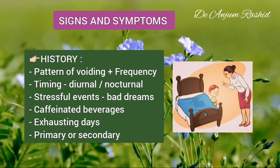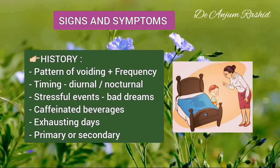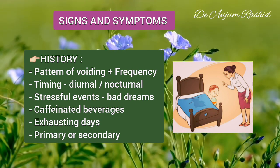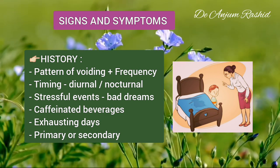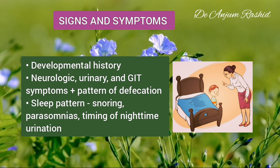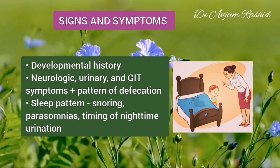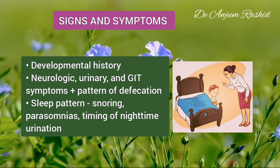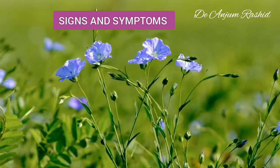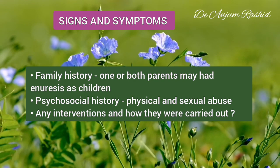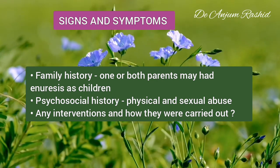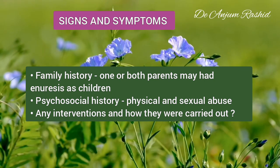The history of the child should focus on clarifying the pattern of voiding, including frequency, timing, whether diurnal or nocturnal, associated conditions or stressful events — for example, bad dreams, consumption of caffeinated beverages, exhausting days — and whether the enuresis is primary or secondary. Systemic review should include developmental history and detailed information about neurological, urinary, and gastrointestinal symptoms, including the pattern of defecation. A history of sleep patterns is important, including snoring, parasomnias, and timing of nighttime urination. A family history often reveals that one or both parents had enuresis as children. Although enuresis is rarely associated with child abuse, physical and sexual abuse history should be included as part of the psychosocial history.